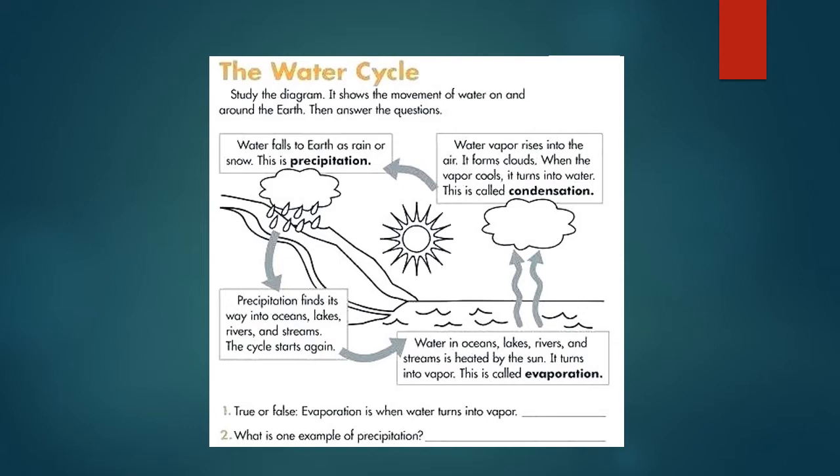And the whole process started over again. See if you can answer the two questions at the bottom. True or false: Precipitation is when water changes into vapor. Question number 2: What is an example of precipitation? Look at the diagram for an answer.